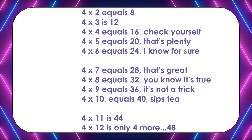4 times 2 equals 8. 4 times 3 is 12. 4 times 4 equals 16. Check yourself — 4 times 5 equals 20. That's plenty.